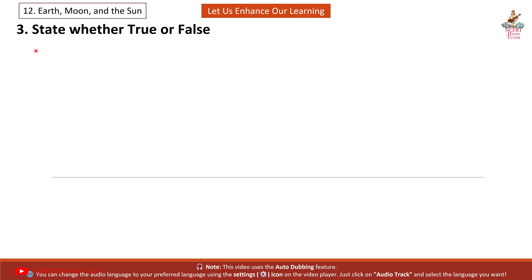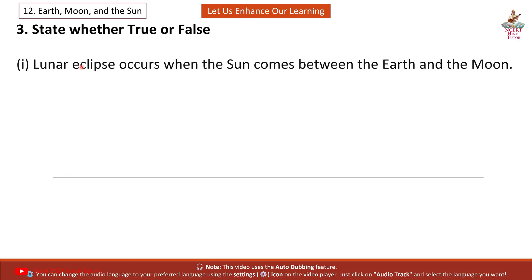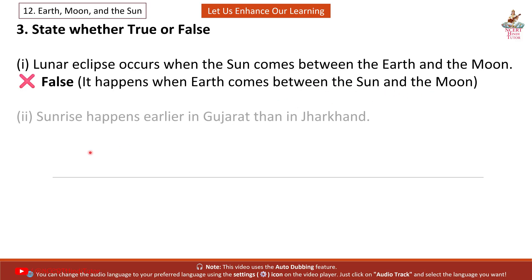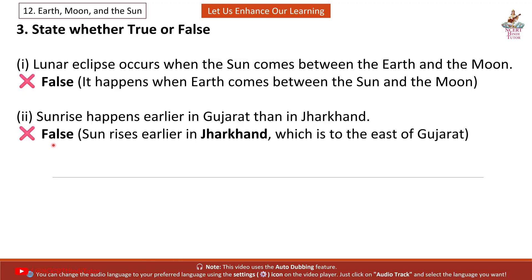Question 3. State whether true or false. 1. Lunar eclipse occurs when the Sun comes between the Earth and the Moon. False — it happens when Earth comes between the Sun and the Moon. 2. Sunrise happens earlier in Gujarat than in Jharkhand. False — the Sun rises earlier in Jharkhand, which is to the east of Gujarat.